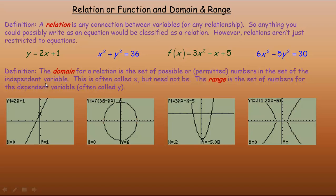Before we get into what a function is, we have to talk about domain and range. Domain is a term used to describe the set of all possible or permitted numbers in the set of the independent variable. Often the independent variable is x — in all of the functions and relations written here, x is the independent variable. The range is the set of numbers for the dependent variable, which we often call y.